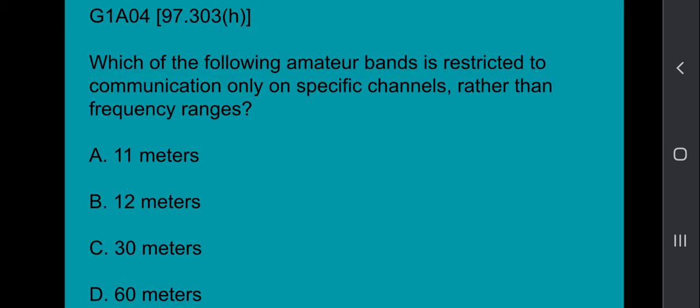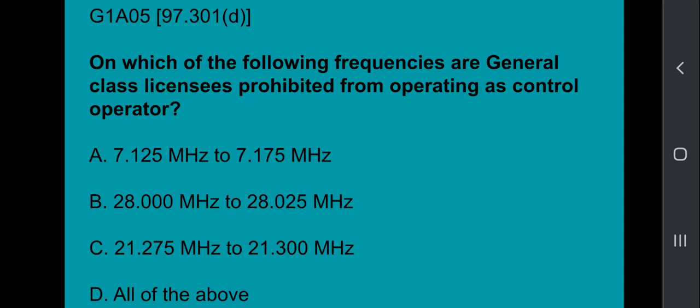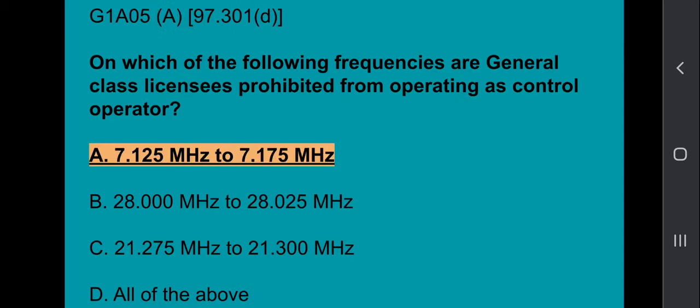G1A04: On which of the following frequencies are general class licensees prohibited from operating as a control operator? That answer is 7.125 MHz to 7.175 MHz.